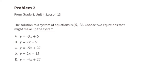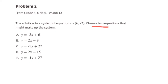Problem number 2, from 8th grade, Unit 4, Lesson 13. The solution to a system of equations is 6 and negative 3. Choose two equations that might make up the system. To do this, we can substitute the x value with a 6 and the y value with a negative 3.